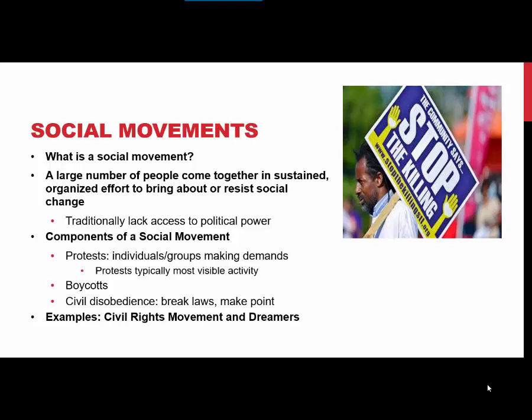In terms of the components of a social movement, there are a lot of different ways that people can organize. Protests, which are typically the most visible activity, involve individuals or groups making demands. They make these demands usually by engaging in civil disobedience, where they break laws in order to make a point, or by engaging in a boycott, where they refrain from doing something or purchasing or supporting something or someone — all as a way to get the powers that be to address their demands.